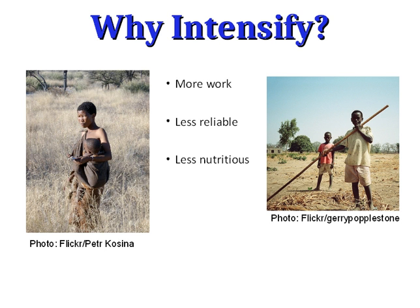That's what hunter-gatherers do. They can't eat a lot of any one thing in most cases because there isn't a lot of any one thing, so they have to diversify their diet. On the other hand, with agriculture — especially when just starting out — you're going to be dependent on a very small number of different species.